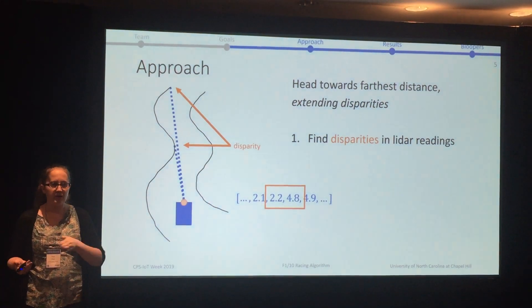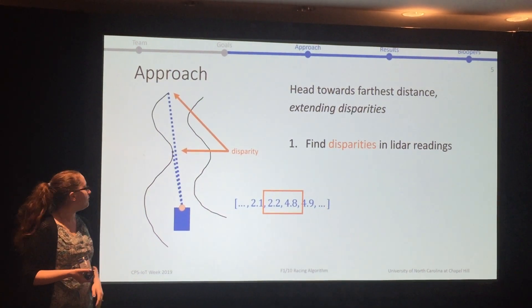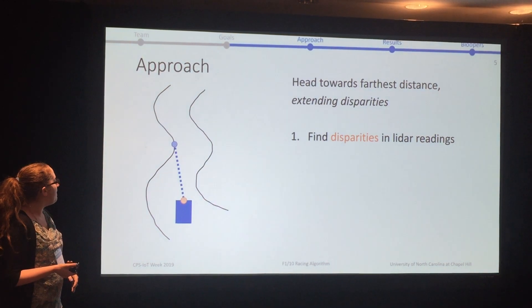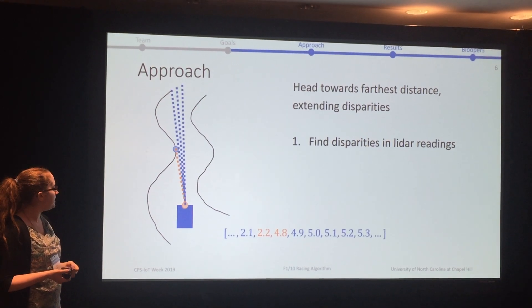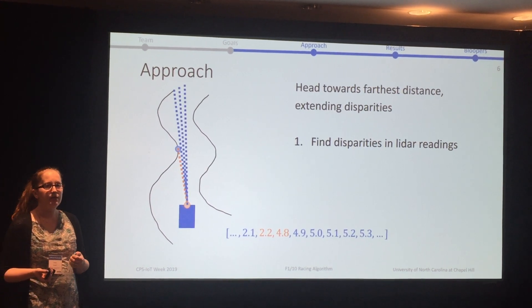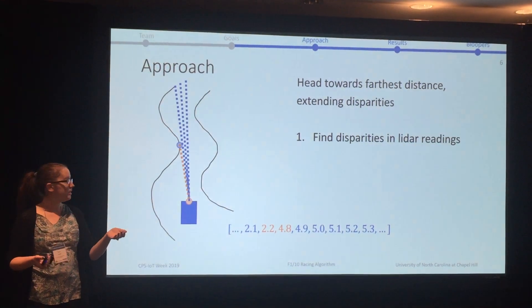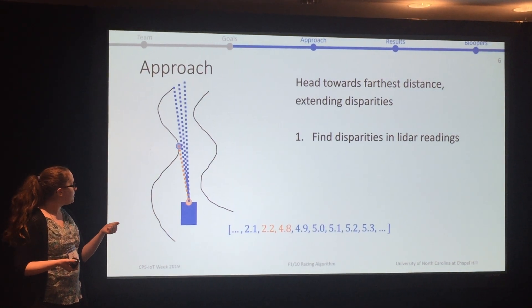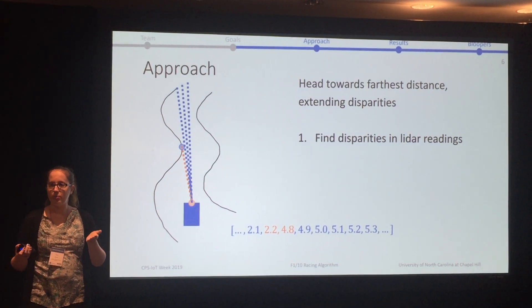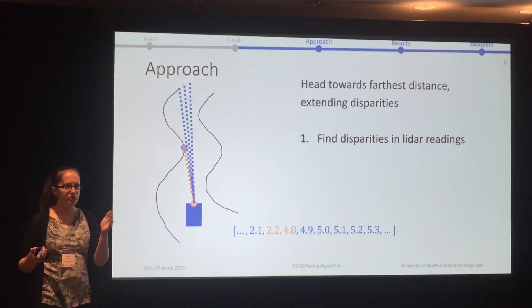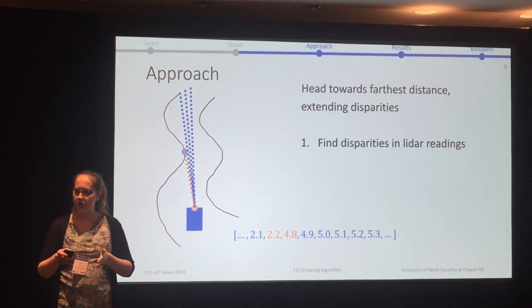We took that disparity to mean maybe that's turning a corner, and that's the path we want to take. If there's no disparity, that's because you have a smooth wall — that was our mentality. It's a good approach, but it's not quite everything you need to consider, because if you just considered the lidar readings, as we've seen, you could hit a wall. So it was important to us to expand out the wall so that we're not going to hit it.